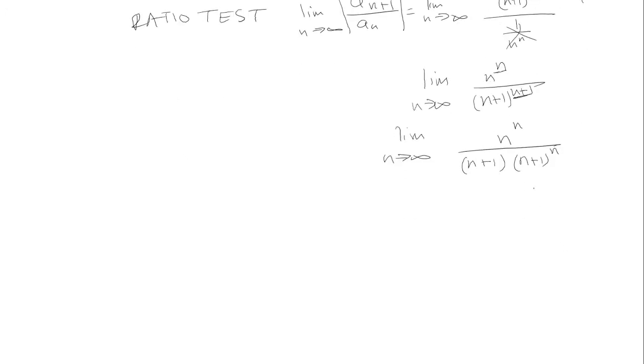So here I can factor out the nth exponent. So I can just have it as n over n plus 1 all to the nth power, and then 1 over n plus 1 like this. So we can split this up.